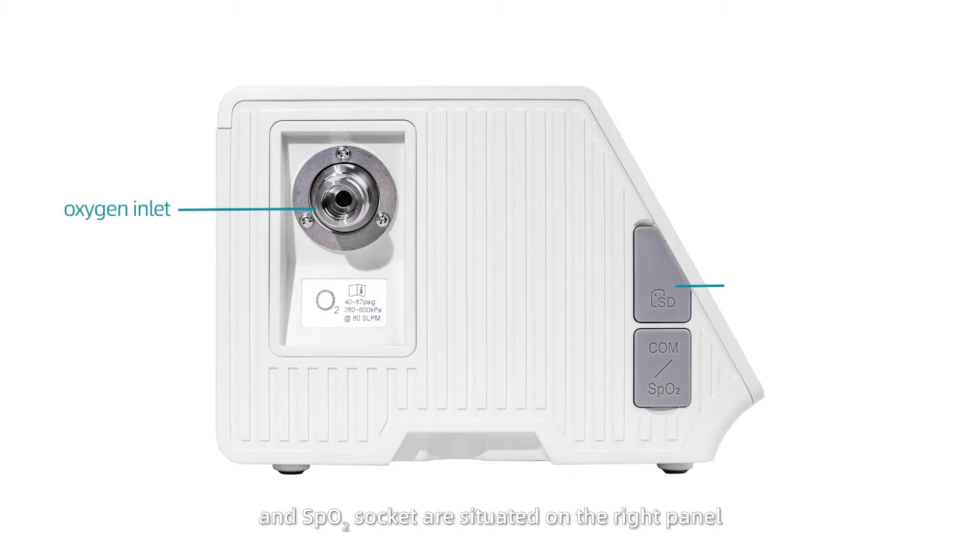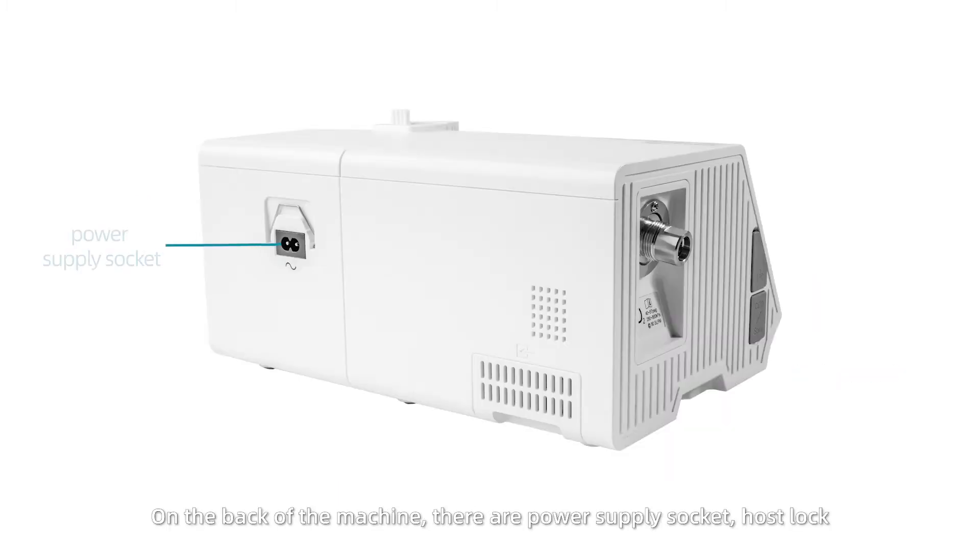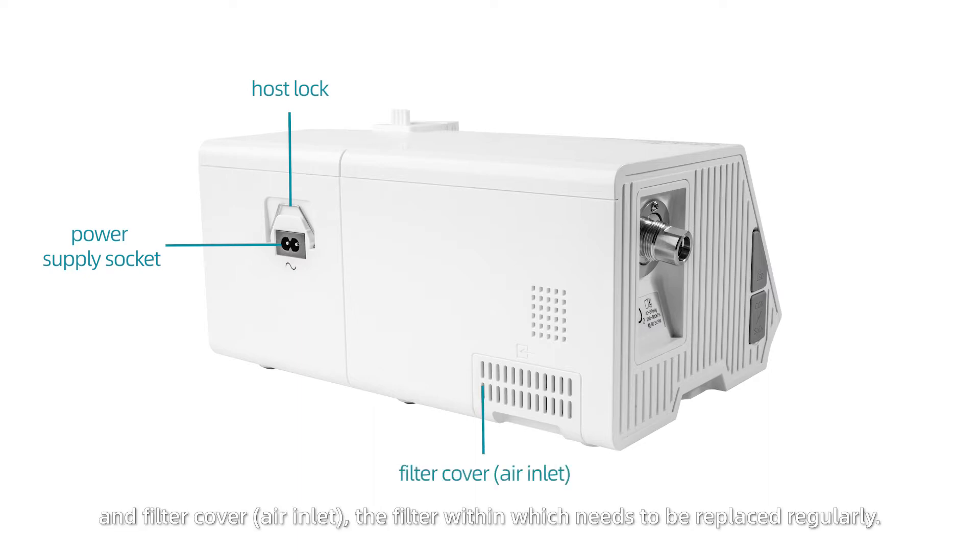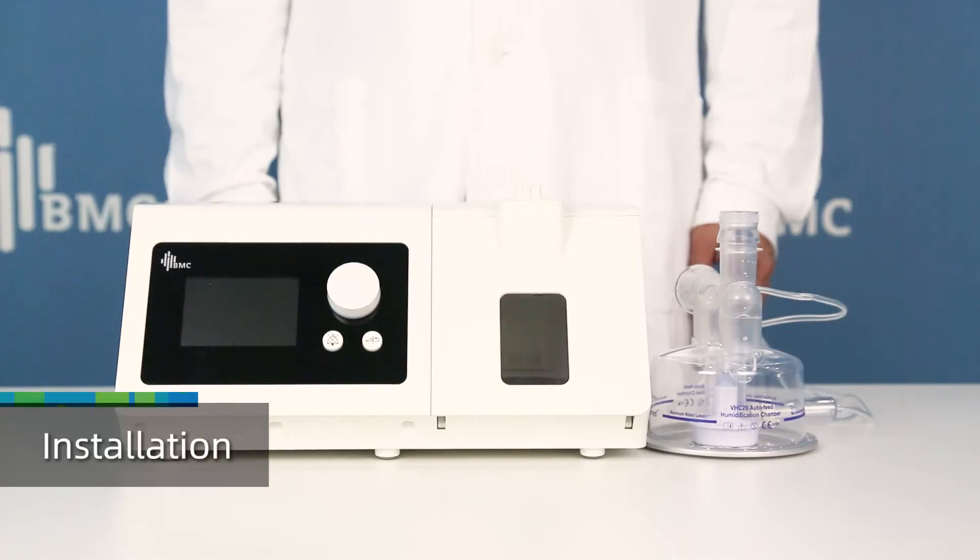On the back of the machine, there are a power supply socket, host lock, and a filter cover. The filter within needs to be replaced regularly. Installation: Open the water chamber cover.